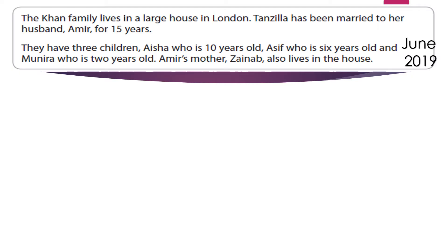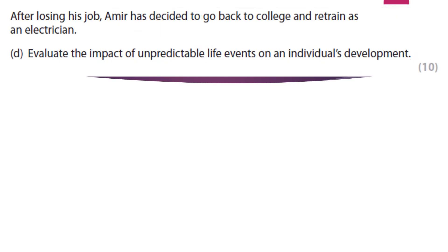Let's take a look at an actual exam question. This is a question from the June 2019 paper about the Kahn family, and I want to focus on this 10-marker about Amir, who has lost his job and decided to go back to college to retrain as an electrician. The question is: 'Evaluate the impact of unpredictable life events on an individual's development.' The key word here is 'evaluate,' so we want to put two sides of an argument.